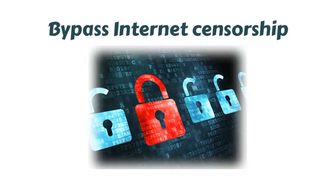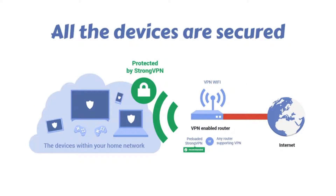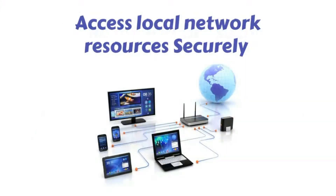VPNs essentially forward all your network traffic to the network, which is where the benefits like accessing local network resources remotely and bypassing internet censorship all come from. Most operating systems have integrated VPN support. When you connect your computer or other device, such as a smartphone or tablet to a VPN, the computer acts as if it's on the same local network as the VPN. All your network traffic is sent over a secure connection to the VPN.